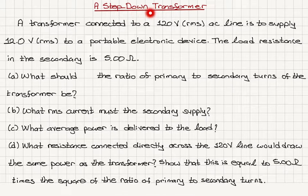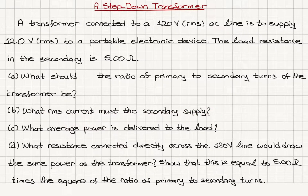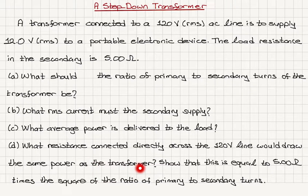A Step-Down Transformer. A transformer connected to a 120V RMS AC line is to supply 12V RMS to a portable electronic device. The load resistance in the secondary is 5 ohms. We need to find: the ratio of primary to secondary turns, the RMS current the secondary must supply, the average power delivered to the load, and what resistance connected directly across the 120V line would draw the same power — showing it equals 5 ohms times the square of the turns ratio.